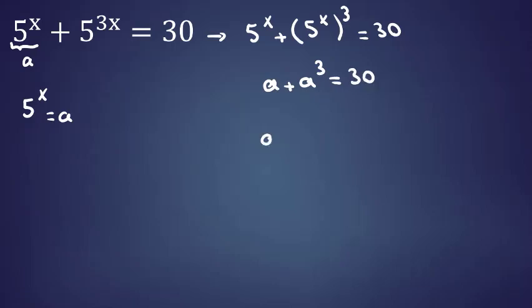Taking everything to the left-hand side, I write a cubed plus a minus 30 equals 0. When you have a polynomial with degree greater than 2, we can use the quadratic formula for degree 2, but here one of the most useful and typical ways is to find one root.